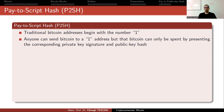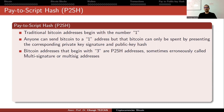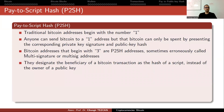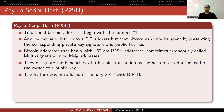Bitcoin addresses that begin with three are pay-to-script hash addresses, sometimes erroneously called multi-signature or multi-sig addresses, but the script doesn't have to be related to multi-signatures. They designate the beneficiary of a Bitcoin transaction as the hash of a script instead of the owner of a public key. This feature was introduced in January 2012 with BIP-16.